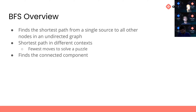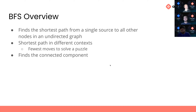BFS finds the shortest path from a single source — the start node — to all other nodes in the graph. This applies to unweighted graphs (both directed and undirected), but not weighted graphs. In one of my interviews, I was given a puzzle where I had to solve it in the smallest number of moves. The simple solution was just to do a BFS — consider every single move, and once you reach the solution, that's the shortest path. BFS also lets you find the connected component: the set of nodes reachable from a specific node.